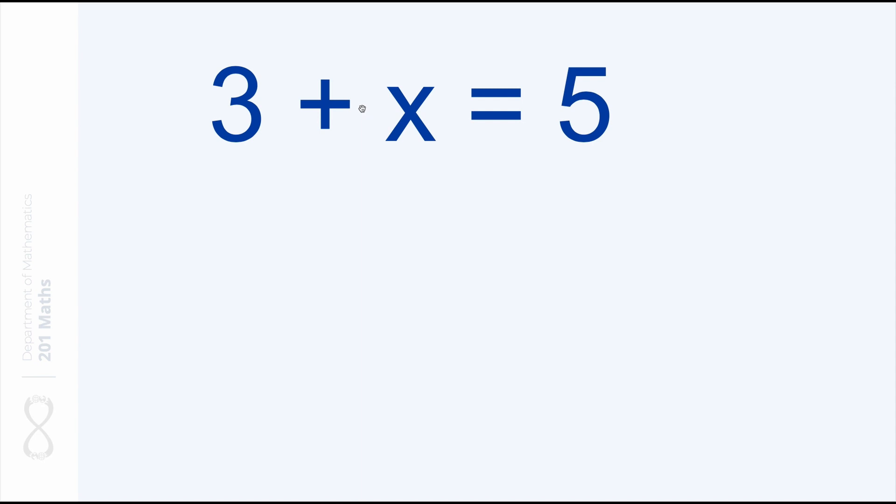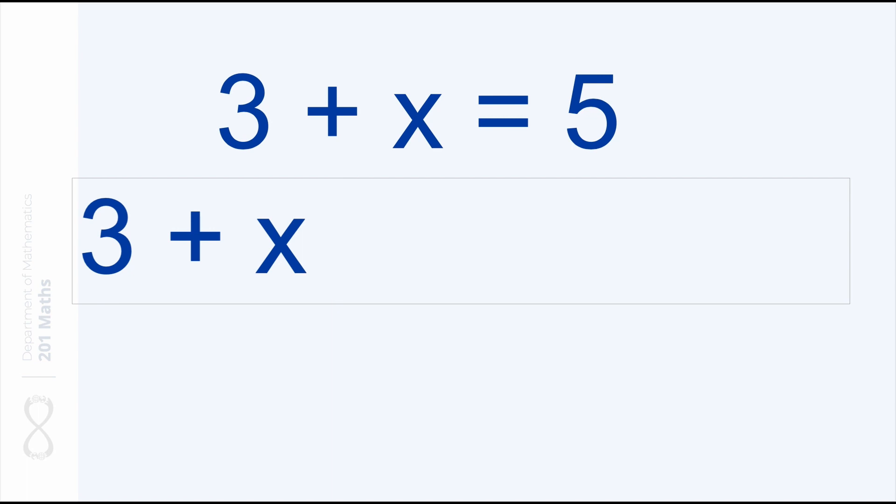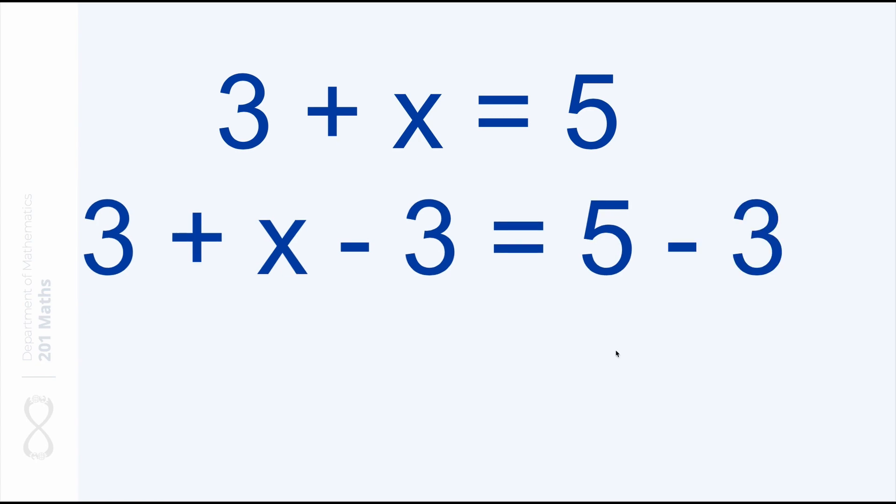And meaning we would have to do the same on the other side. So let's start with the left side. On the left side we have 3 plus x and we're going to subtract 3. So then we are left with x only. And then on the right side we need to do the exact same change, meaning we have 5 and we also subtract 3.